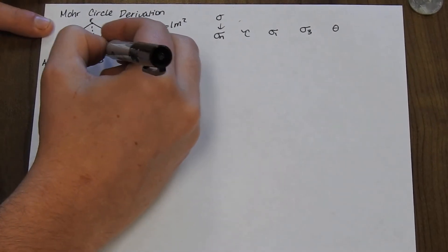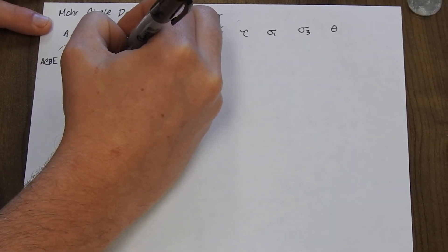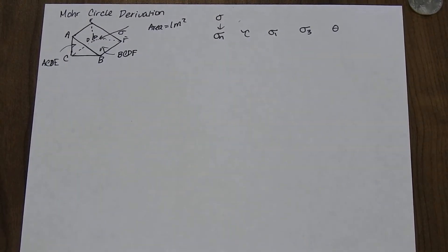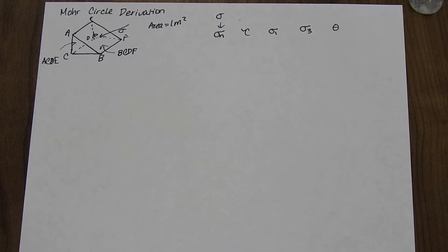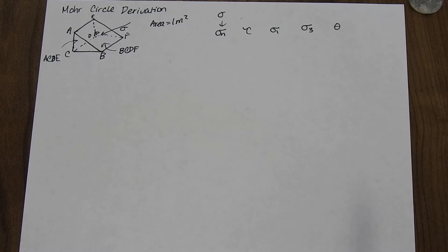This bottom side is going to become B, C, D, F. And the top we'll keep referring to as P, because that's the top of our prism plane. Now let's imagine that we're going to have a sigma one and a sigma three — those two principal stresses, sigma one being the biggest and sigma three being the smallest — and we're going to apply them to this prism.